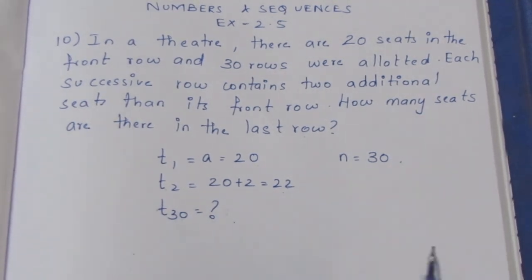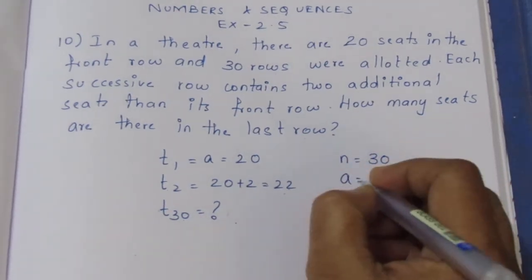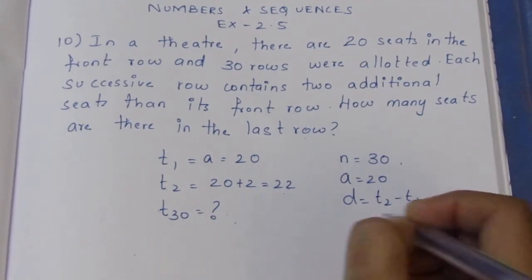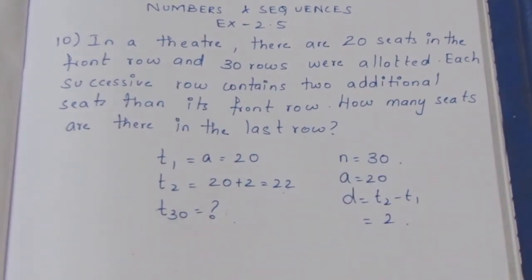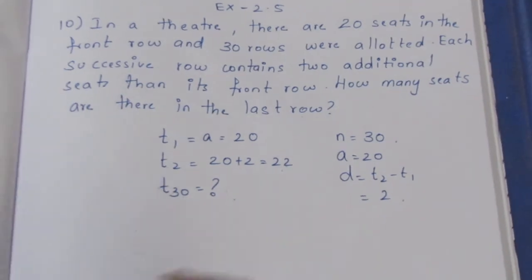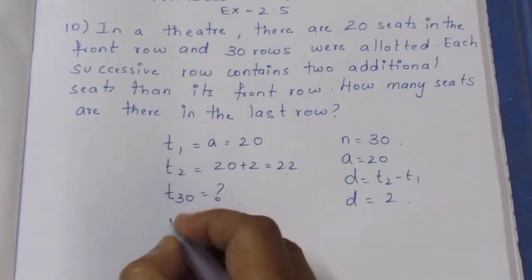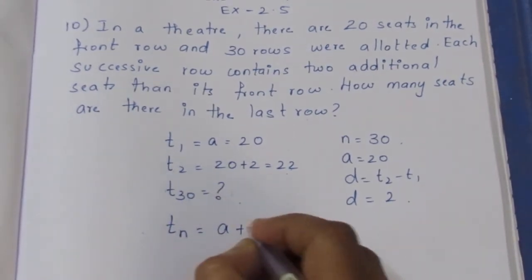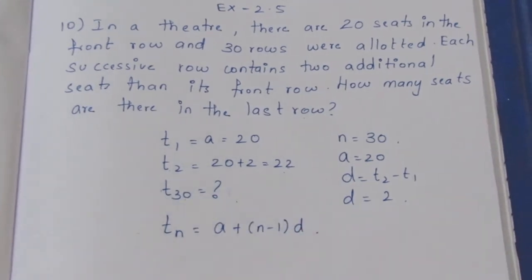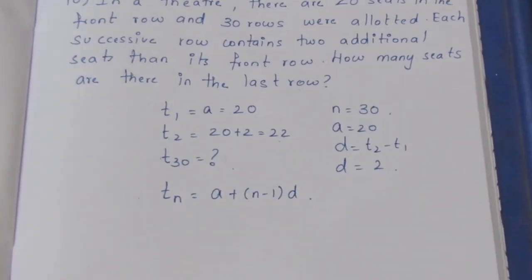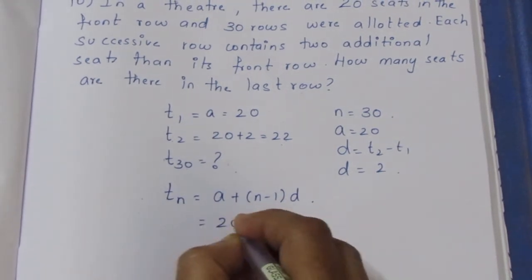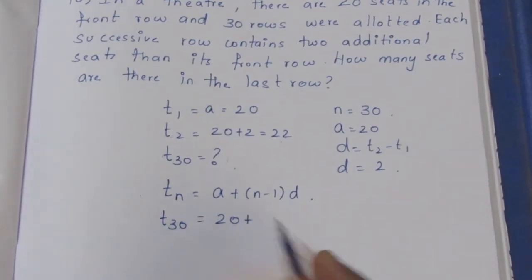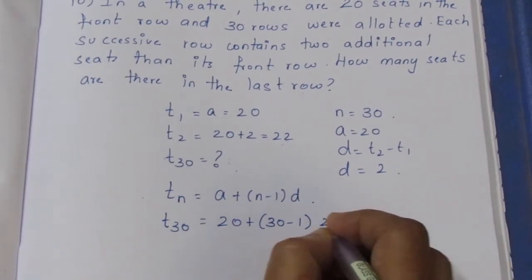The number of seats: A is 20, and D is T2 minus T1, which is 22 minus 20, so D equals 2. So T30 uses the TN formula: TN equals A plus N minus 1 into D. A is 20, N is 30, so we calculate 30 minus 1 into 2.